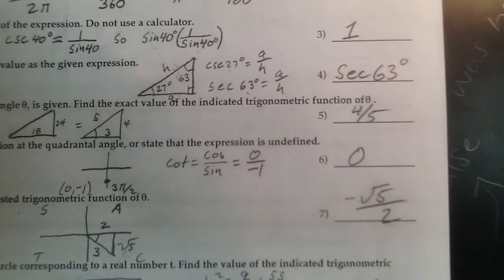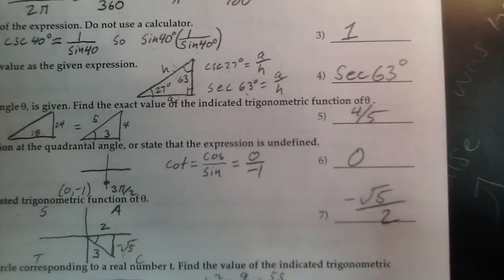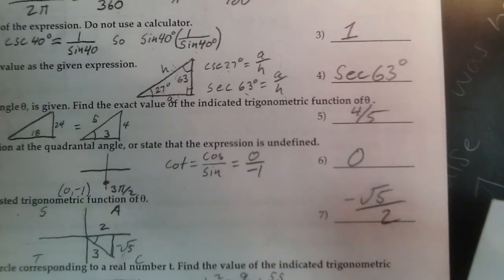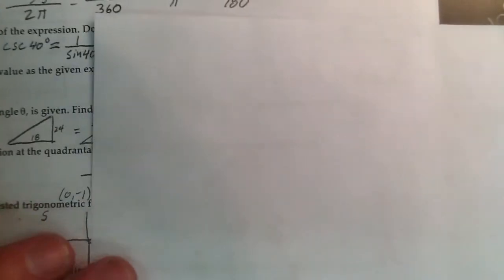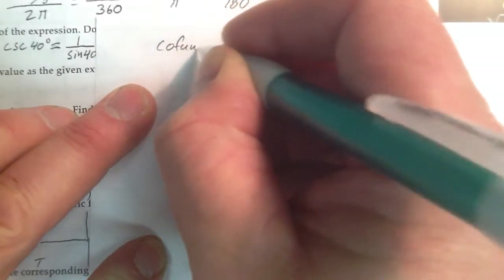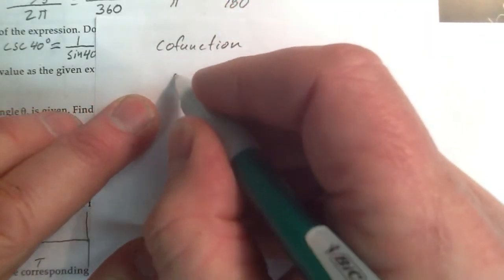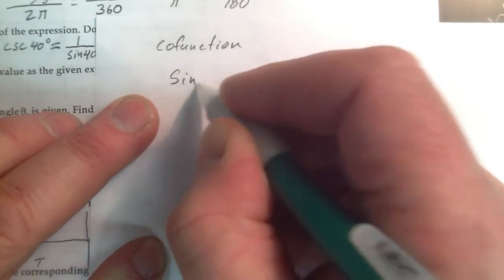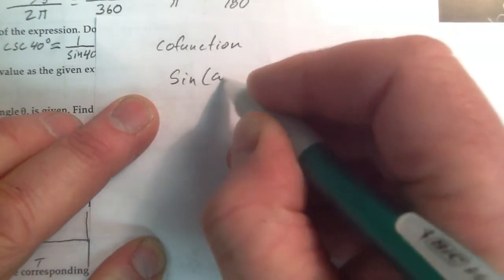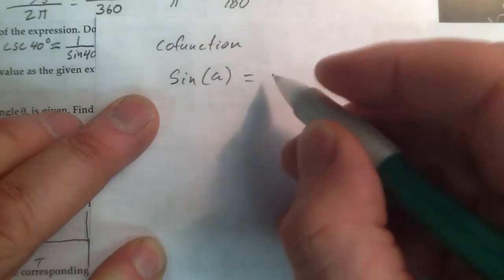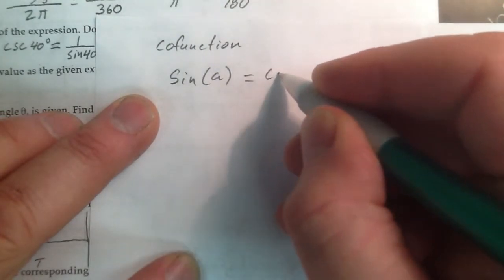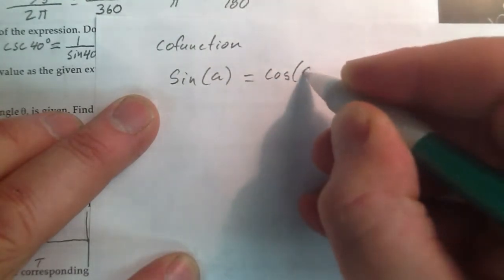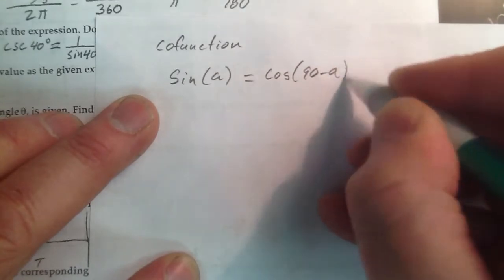Your cofunction, and this is in your book, is the sine of your angle is equal to the cosine of the complement.